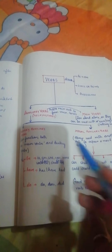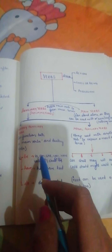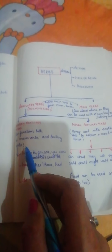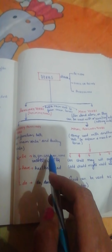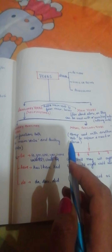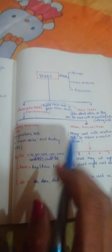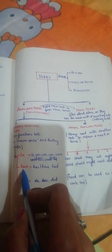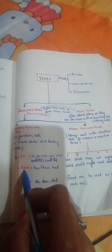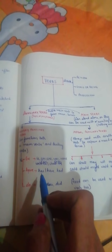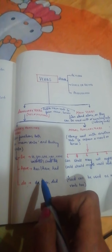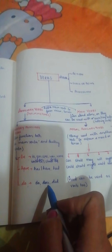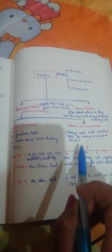For primary auxiliary verbs we can divide them into three families: BE, HAVE, and DO. The BE family has 'be' as the head, and its members are: is, am, are, was, were, been, being. The HAVE family's head is 'have,' and its members are: has, have, had. The DO family's members are: do, does, did.